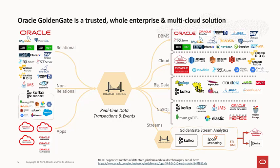One of the fastest growth areas for GoldenGate has been in the last five years: customers using the technology to provide a continuously flowing stream of transactions into the cloud and into their big data environments. GoldenGate truly is a multi-cloud solution with certified support for a wide variety of public clouds as well as big data technologies. GoldenGate today supports over a thousand different combinations of data stores, platforms, cloud technologies, and databases — truly providing that trusted whole-enterprise multi-cloud solution for real-time data events.